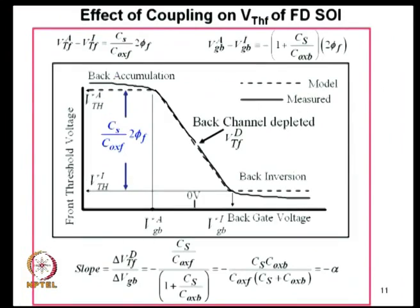People are looking at devices realized with both gates connected together, so that there is only one gate control supply. Making it symmetric and connecting both gates eliminates the need for separate front and back gate supplies. The threshold versus back gate bias shows: back gate accumulated gives highest threshold, back gate inverted gives lowest. The slope depends on the ratio of front to back oxide capacitances.